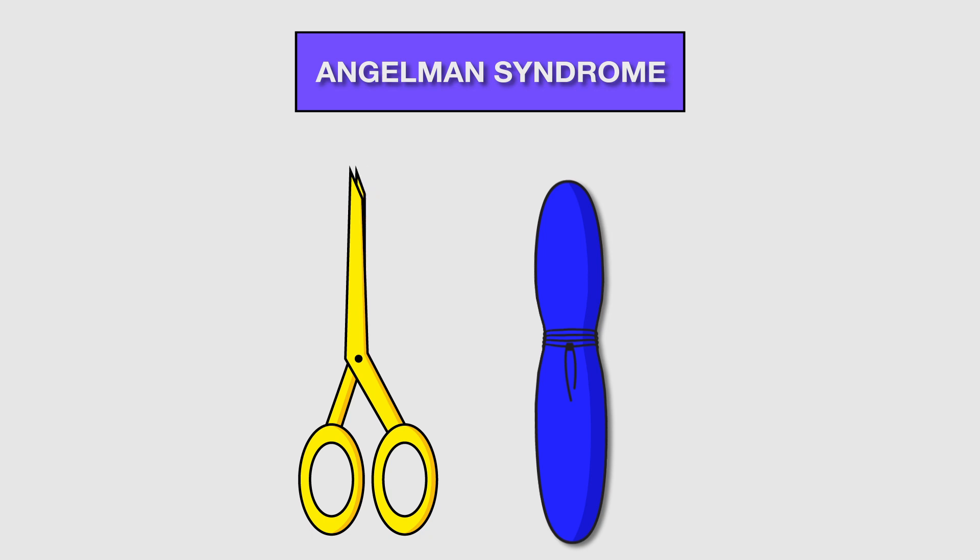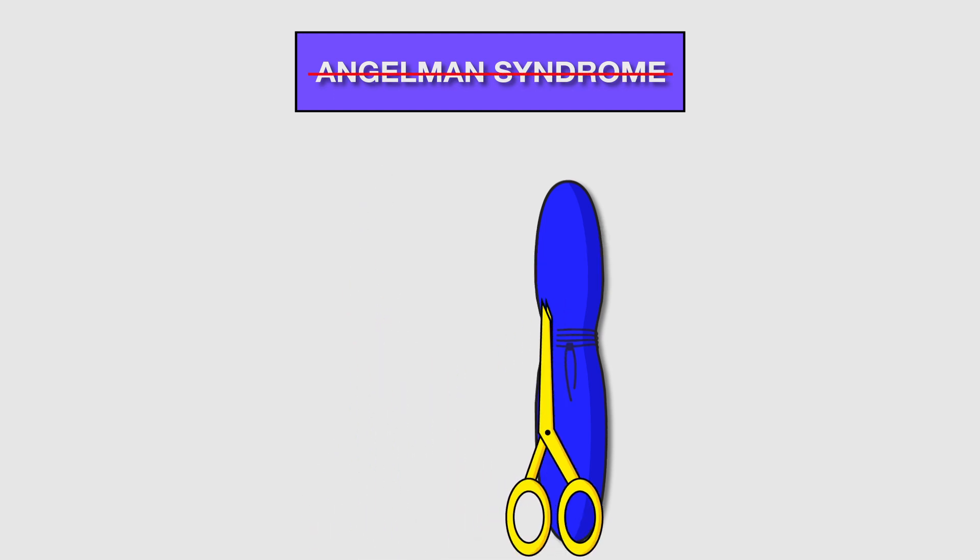CRISPR-Cas9 is a gene editing technique that allows scientists to make changes to any part of the genome with exquisite precision. The Zylka lab discovered where to cut the antisense transcript with CRISPR-Cas9.